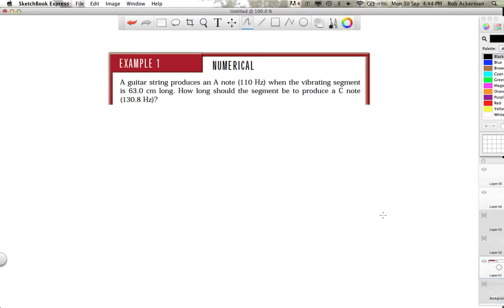So here's a question that is somewhat new. It's a guitar string question. They say that a guitar string produces the note that a musician calls A—so that's as in all the notes A, B, C, D, E, F, and G—at 110 hertz. And of course, guitars have strings that vibrate, and they tell you the length of the string is 63 centimeters. Now they ask you, how long should the segment be to produce a C note at a slightly different frequency here?